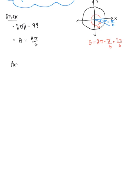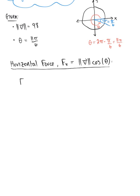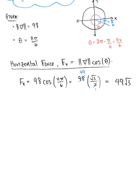The horizontal force F sub x equals the magnitude of V times cosine of theta. Plugging in what we know: F sub x equals 98 multiplied by cosine of 11 pi over 6. This simplifies to 98 multiplied by the square root of 3 over 2. Since 2 goes into 98 forty-nine times, we get a final answer of 49 times the square root of 3.